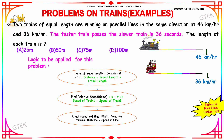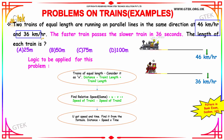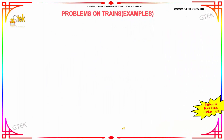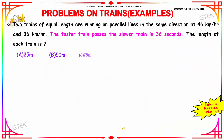We need to find the relative speed. Since the trains are moving in the same direction, relative speed is u minus v — that is, the speed of train one minus the speed of train two. With the relative speed and time known, we can calculate the distance and find the length of each train.